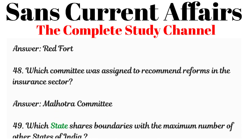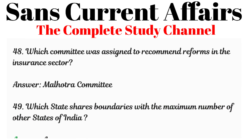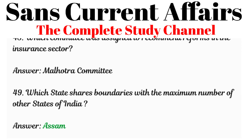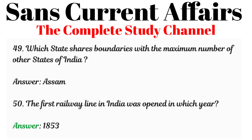Question 49: Which state shares boundaries with the maximum number of other states of India? Answered: Assam. Question 50: The first railway line in India was opened in which year? Answered: 1853.